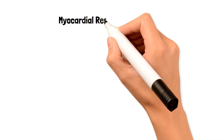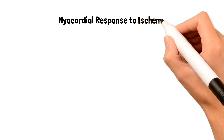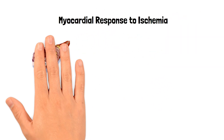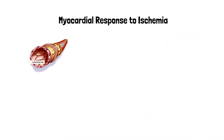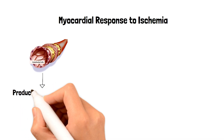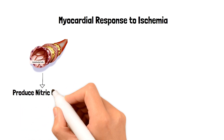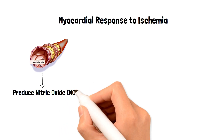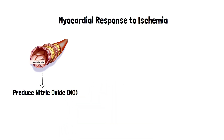To do this, the coronary artery has to dilate. The coronary endothelial cells produce nitric oxide, a gaseous molecule that promotes coronary vascular dilation.